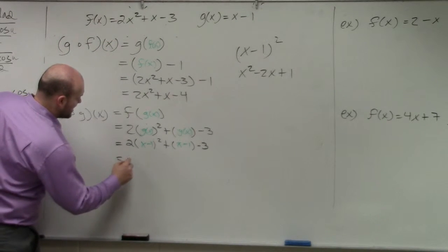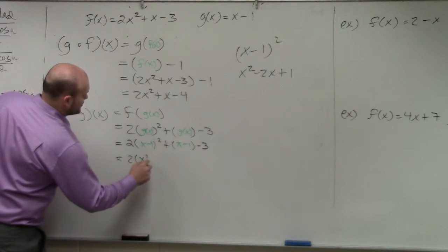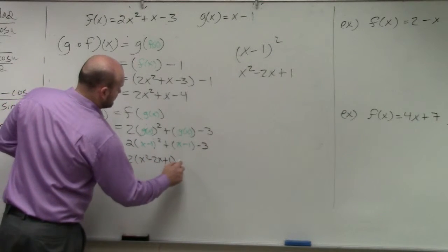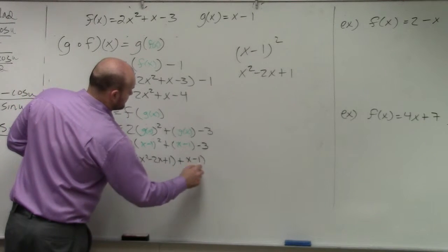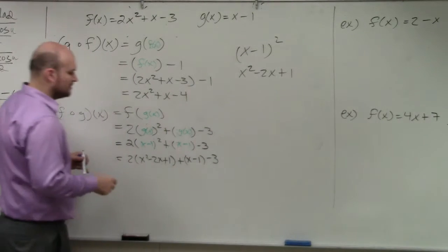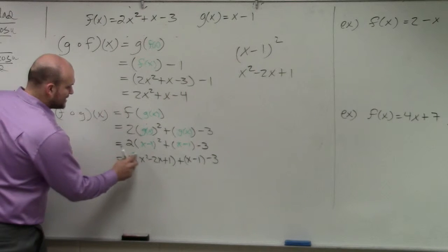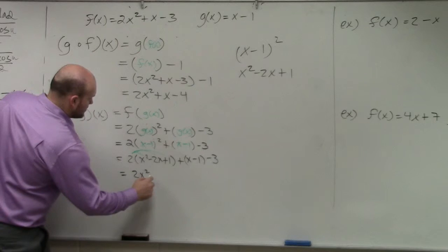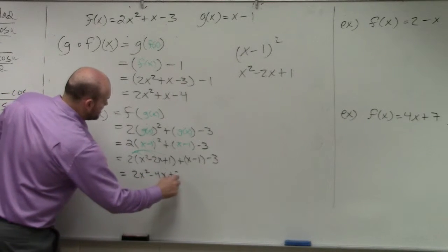So therefore, I have 2 times x squared minus 2x plus 1 plus x minus 1 minus 3. Well, now I'm just going to apply distributive property. So therefore, I have 2x squared minus 4x plus 2.